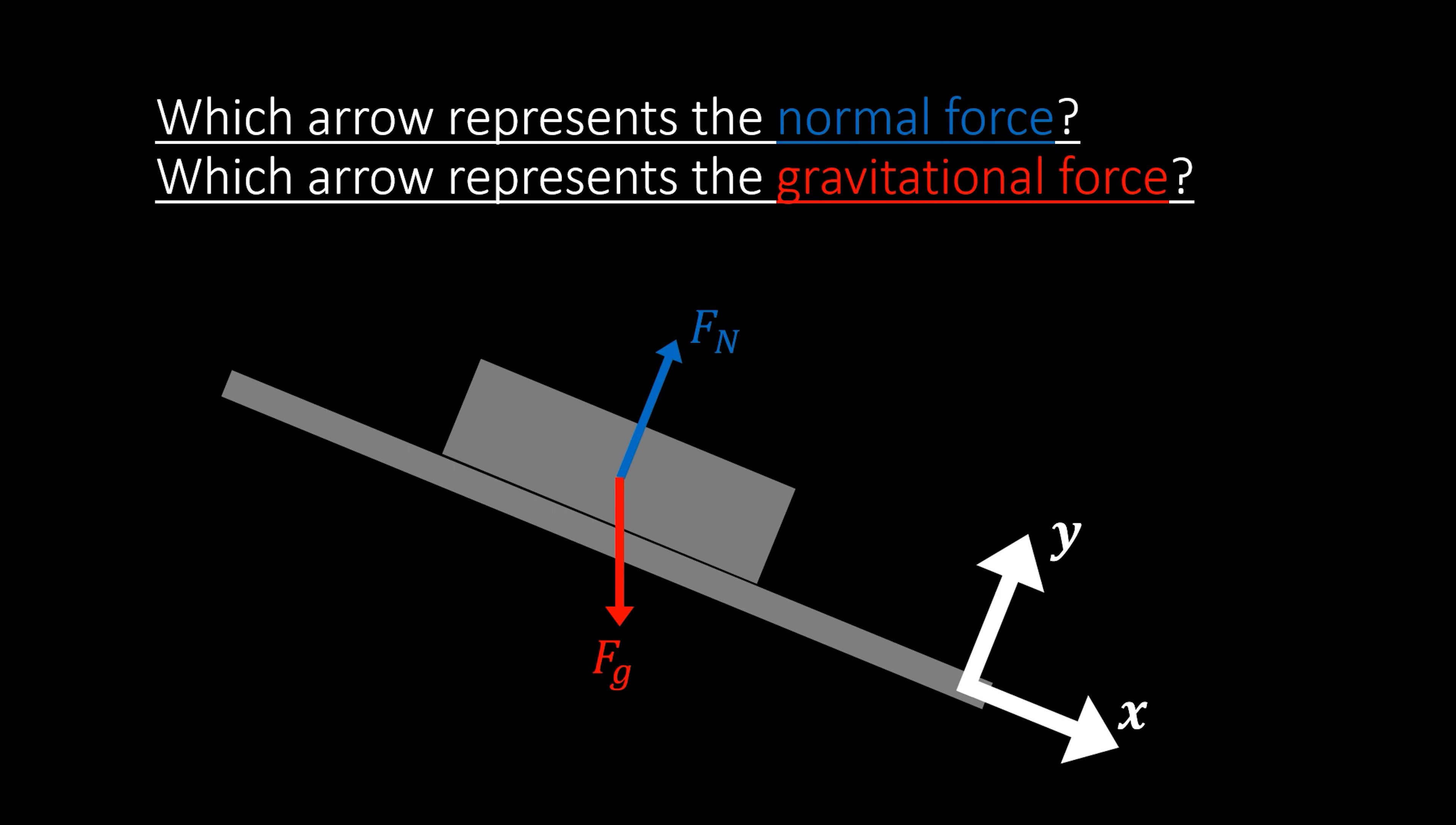All right, so now that you've had a second to think, the normal force is going to be arrow 1 and the gravitational force is going to be arrow 6. It might look odd seeing that the normal force isn't pointing straight up but it's at an angle. But we have to remember that the normal force is always perpendicular to the surface at which the moving object is connected to.